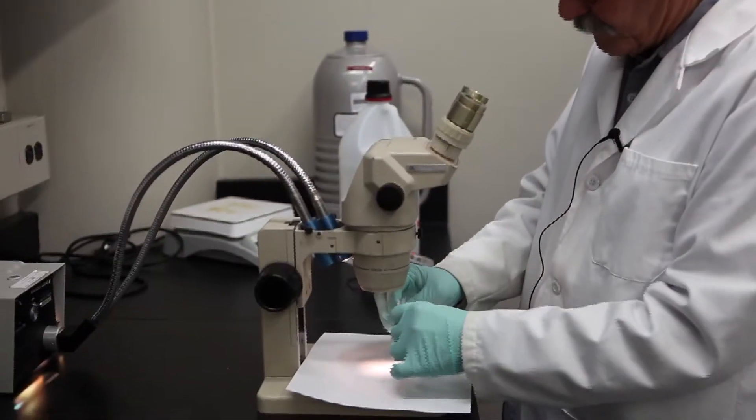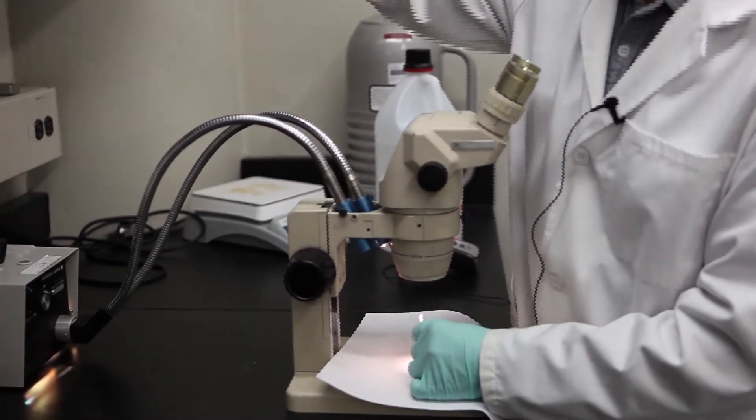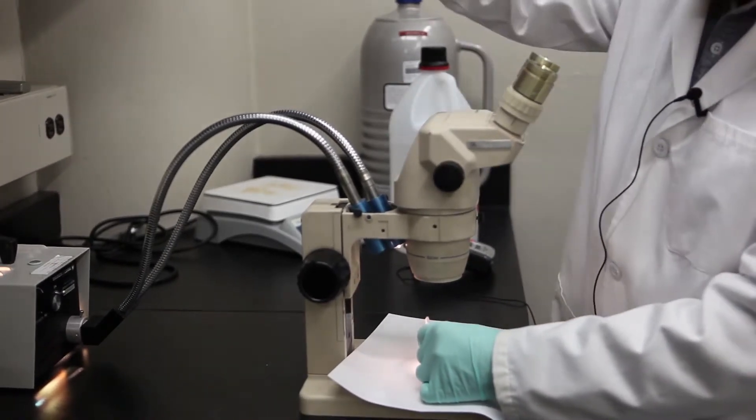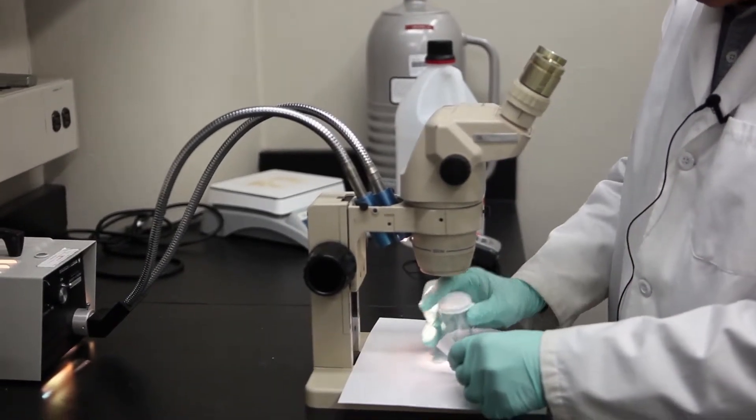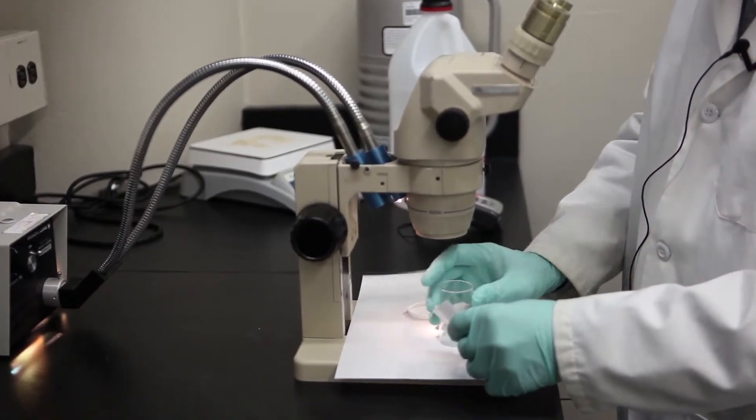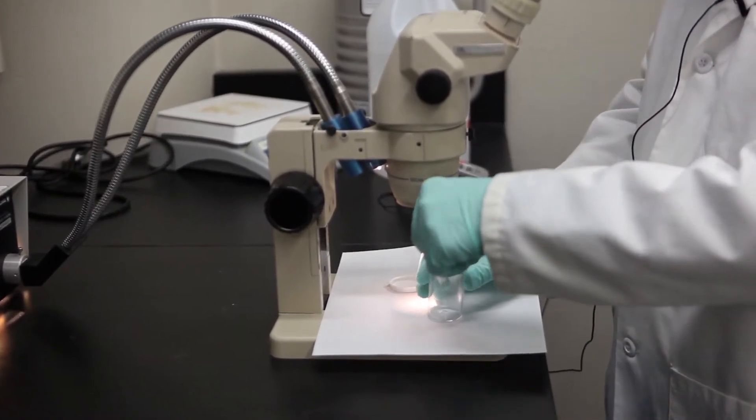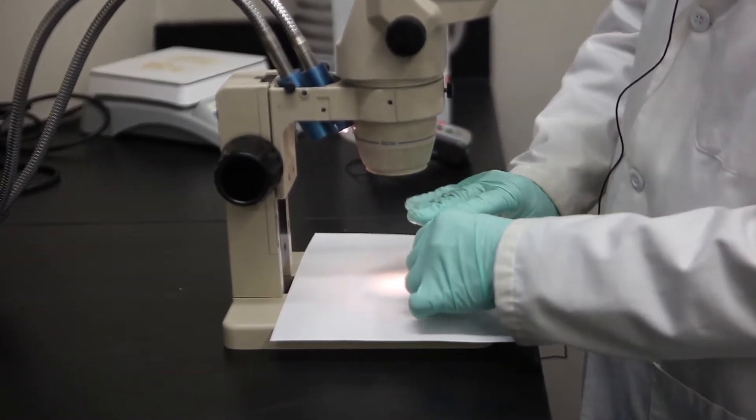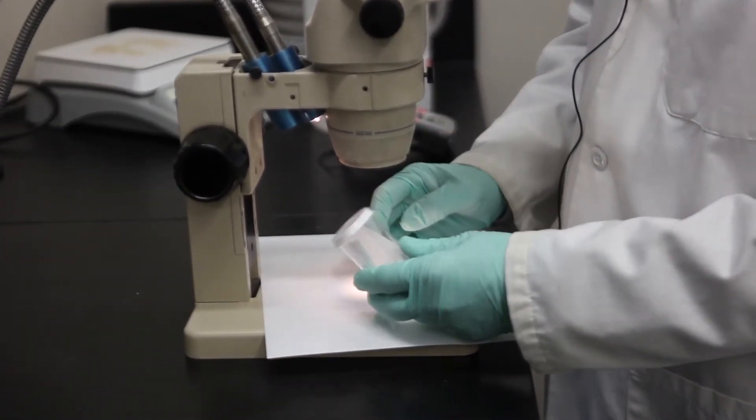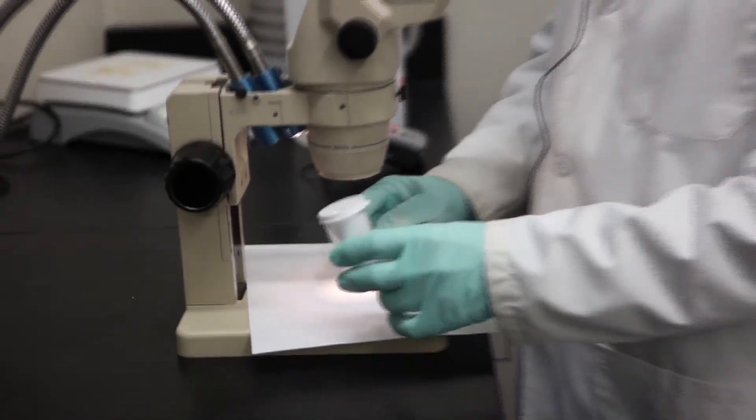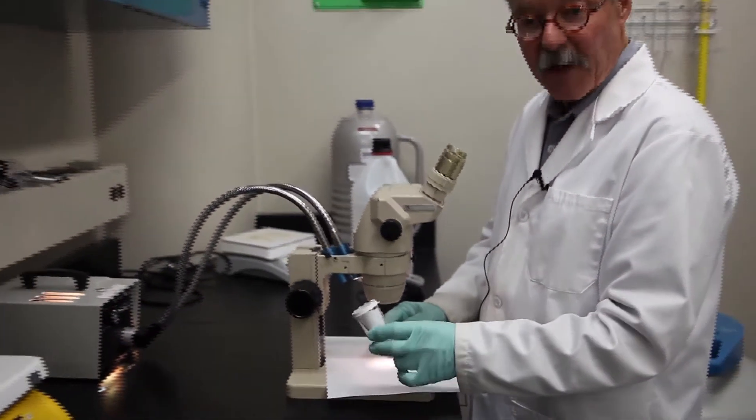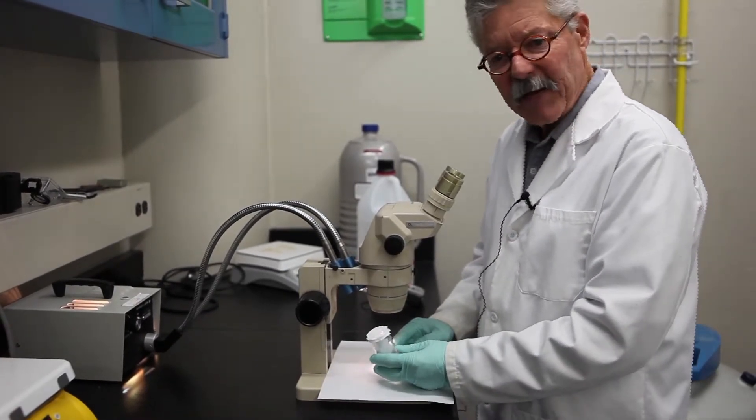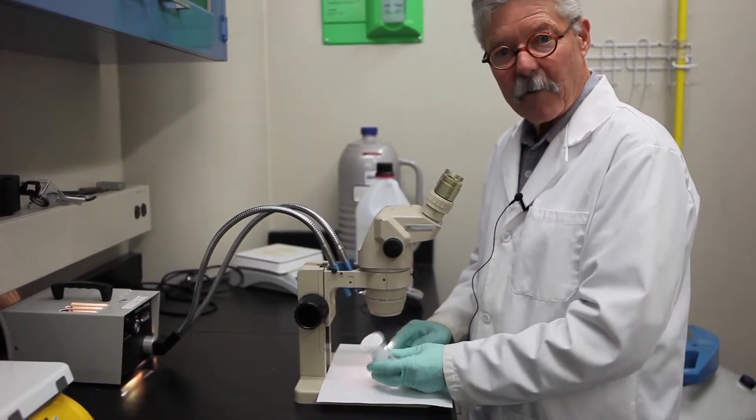So at this point in time, we are now going to put the sample into a snap cap vial so that it's contained. And then we are going to properly make notation on the vial, so that everybody knows what procedures have been performed on this sample. And then it will go up to our upstairs picking room, where it will be prepared for mounting.